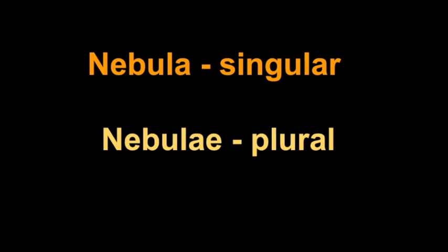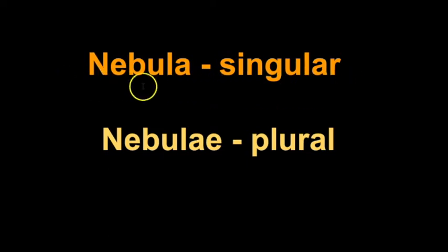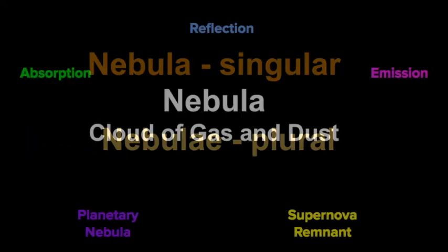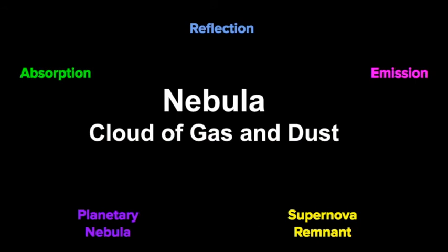Before we dive into the different types of nebulae, let's go over the singular and plural versions of this word. When we talk about one specific nebula, that's the singular version. If we say 'nebulae,' that is the plural form — more than one nebula. There are five main types of nebulae.